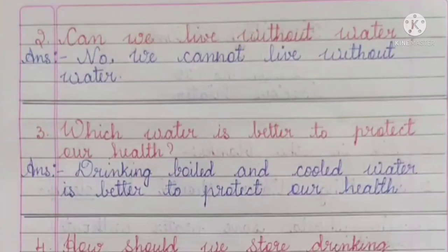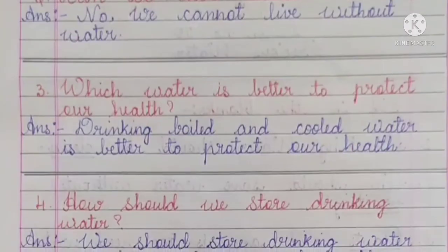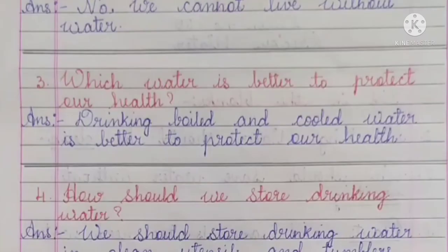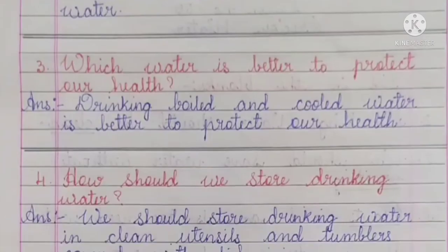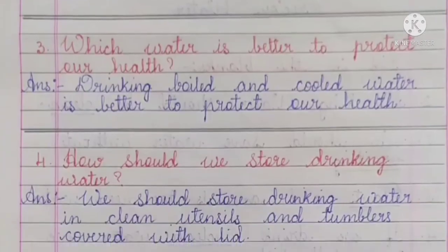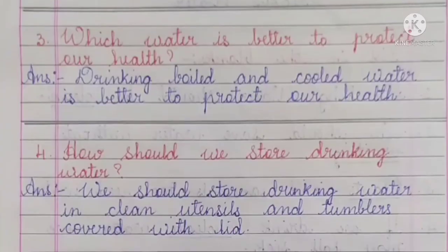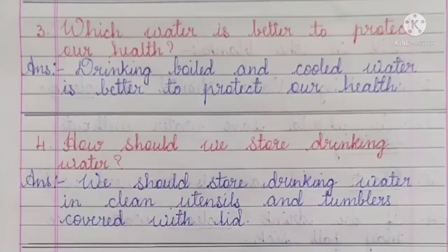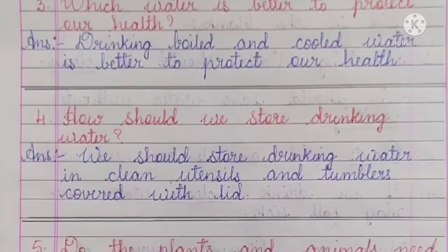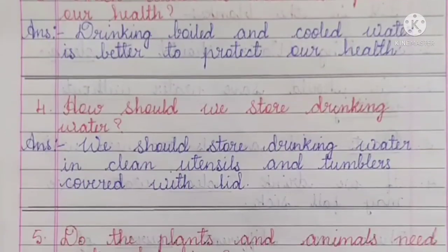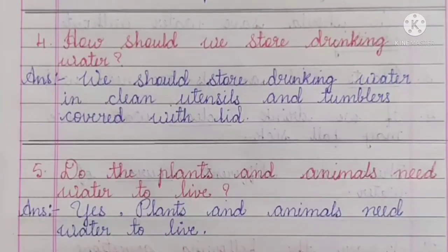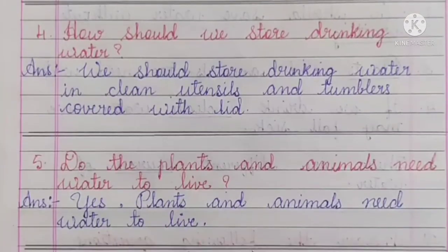Number 3, which water is better to protect our health? Answer: drinking boiled and cooled water is better to protect our health. Number 4, how should we store drinking water? Answer: we should store drinking water in clean utensils and tumblers covered with a lid. Number 5, do plants and animals need water to live? Answer: yes, plants and animals need water to live.